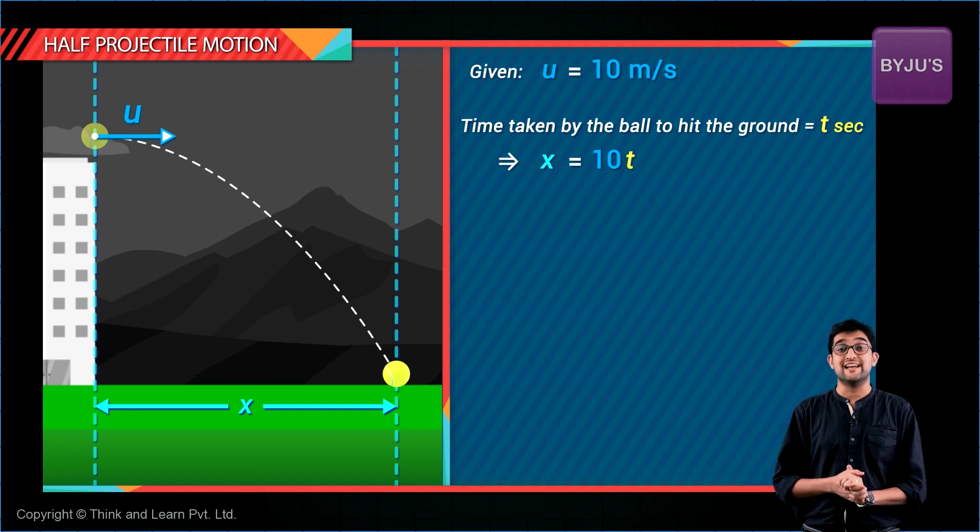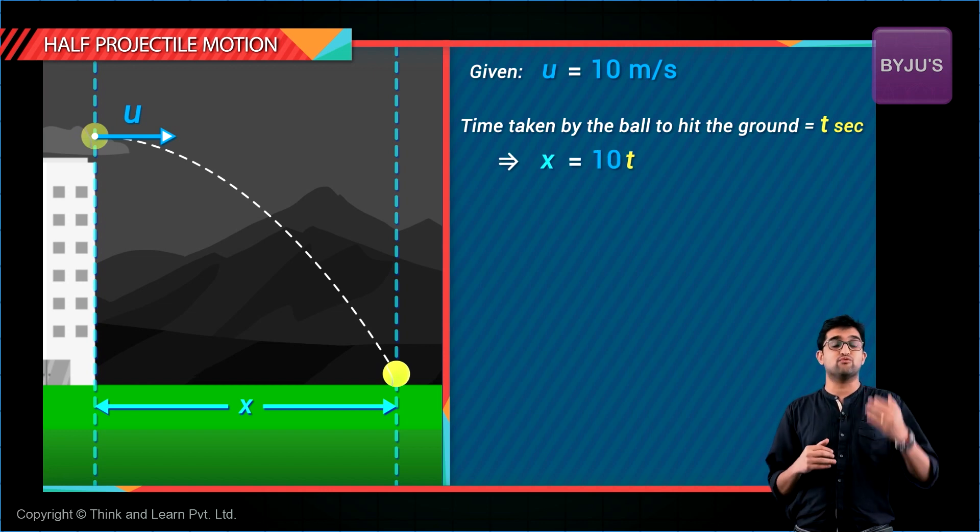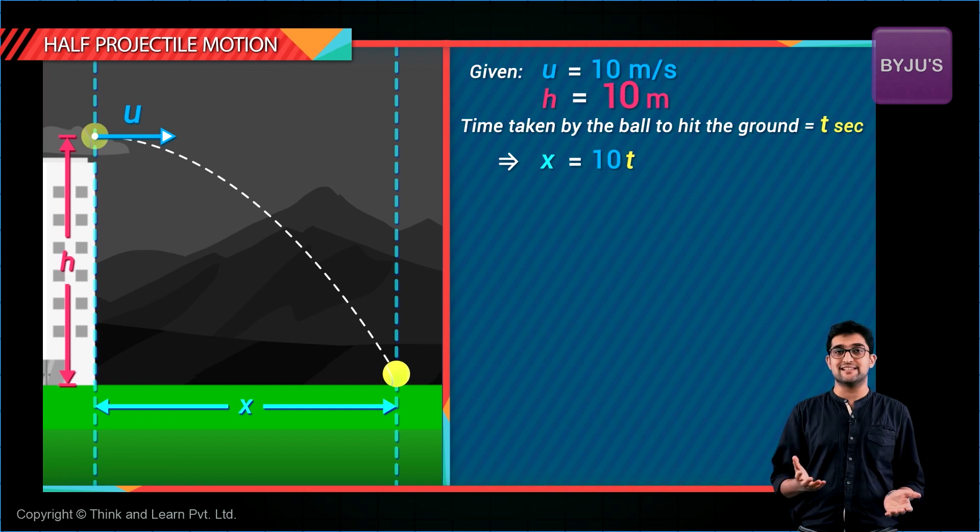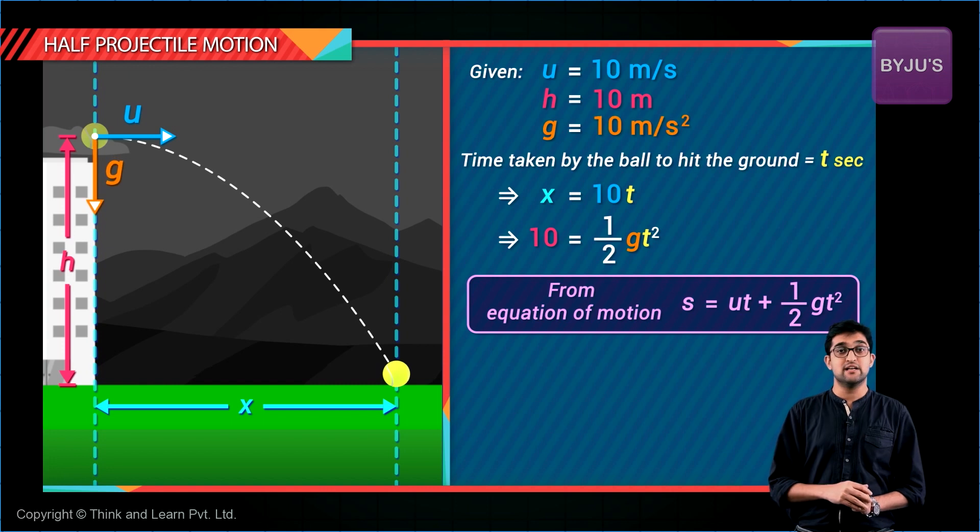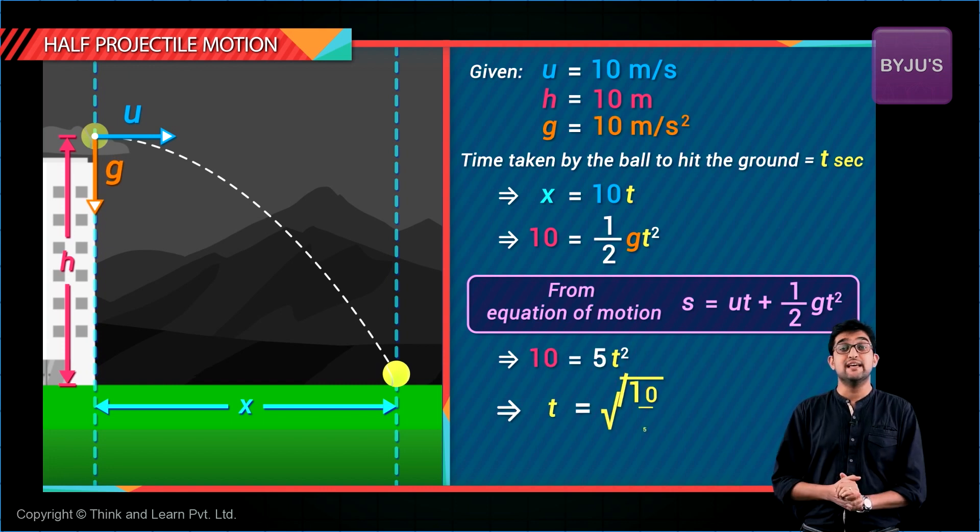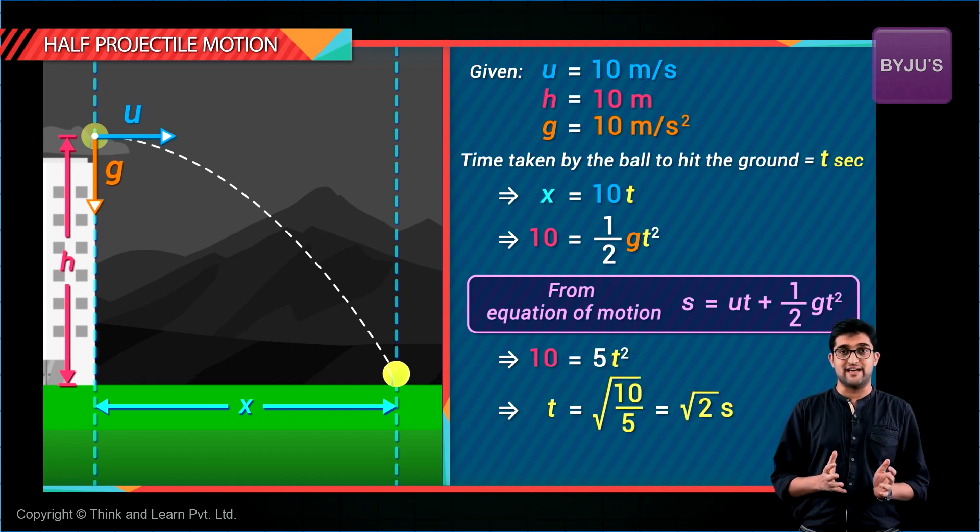What about the vertical distance? It's already given as 10 meters, right? So 10 meters will be equal to half into g into t squared. g is 10 meters per second squared, so that's 5 t squared. So t will be 10 by 5 root of that, which is root 2.